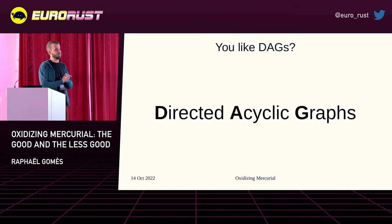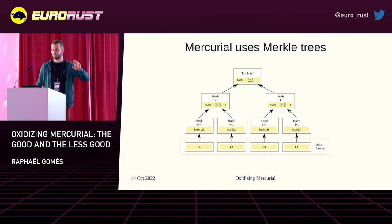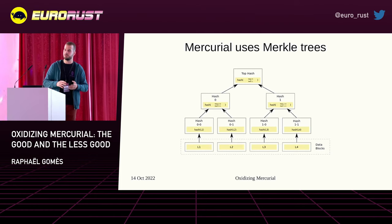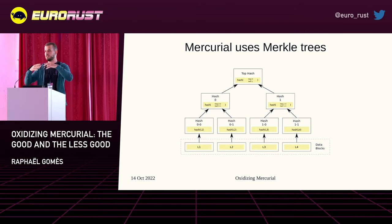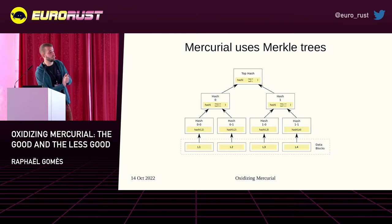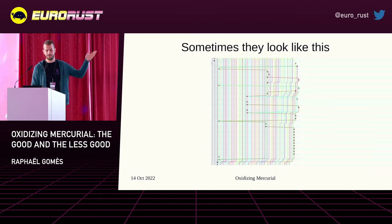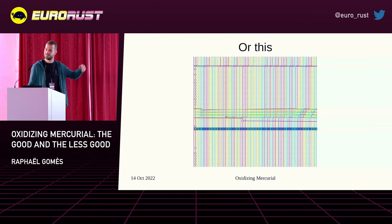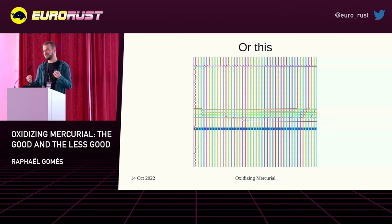Very small background: in Mercurial, we use directed acyclic graphs. Specifically, a special kind called Merkle trees, which is a cryptographic data structure where the hash of the children is defined by the hash of its parents, giving you very nice properties. You're very familiar with Merkle trees if you've ever looked at your commit history — sometimes it looks simple, and sometimes it looks like what some people have called Guitar Hero.